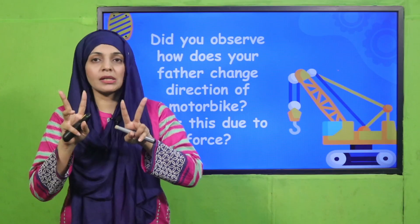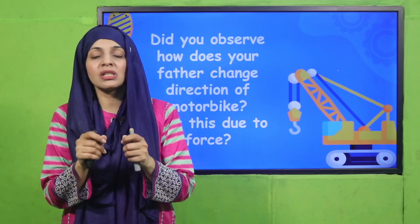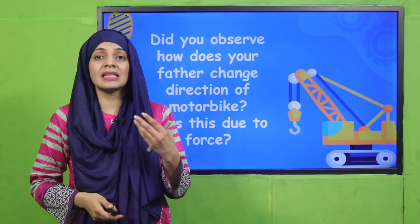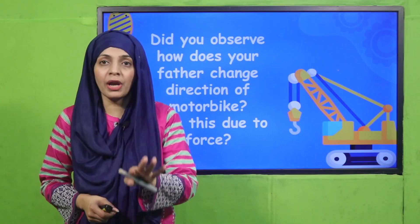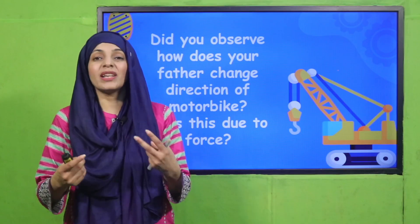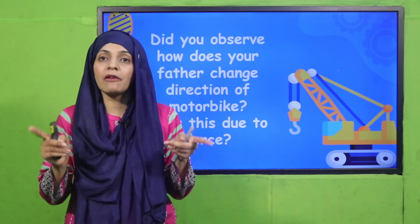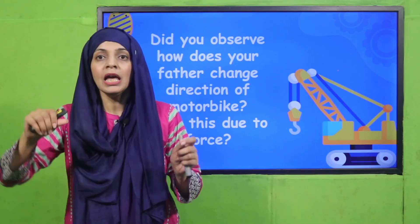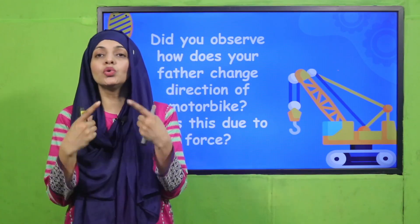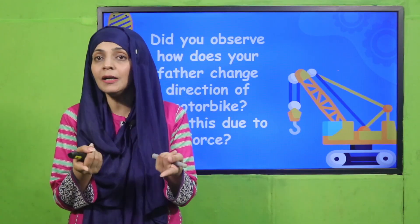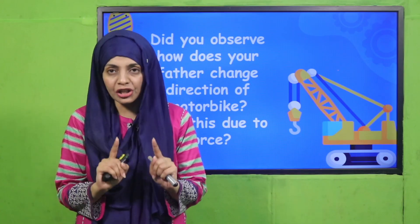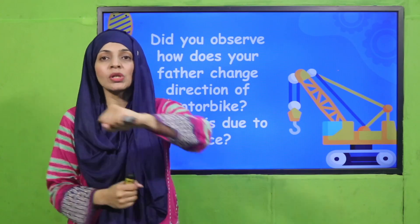So, because of these two forces, the bike is running. The same example applies to the car. To turn a car, you apply the steering. There are two forces in it: one force is the human force, which is turning the steering or pressing the brake, and the other force is applied by the machinery.